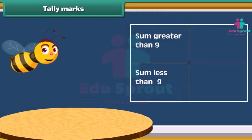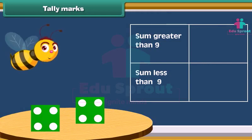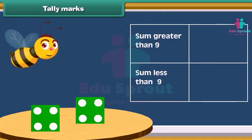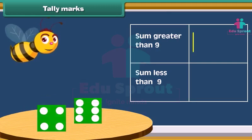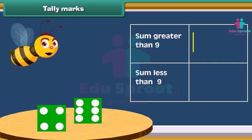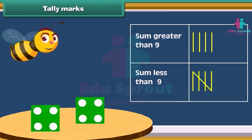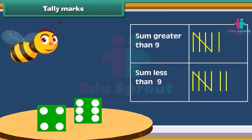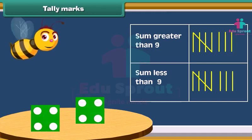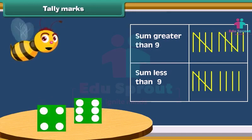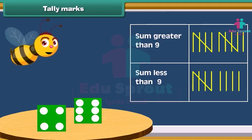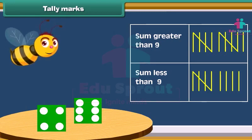Now let's do an activity. Take 2 dice and throw both together. Note how many times the sum of numbers on both dice is greater than 9, and also note the number of times the sum is less than 9. Do this activity 20 times and mark in the table each time. This marking helps us to record data — these are called tally marks.